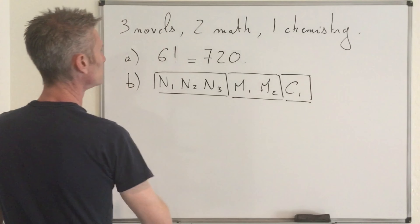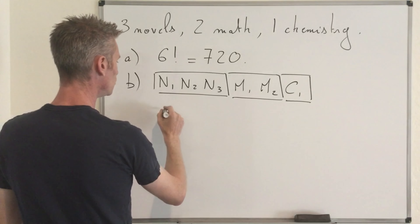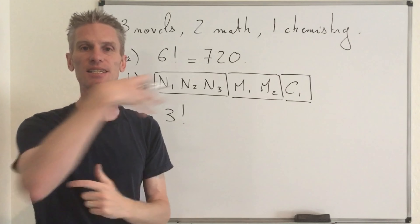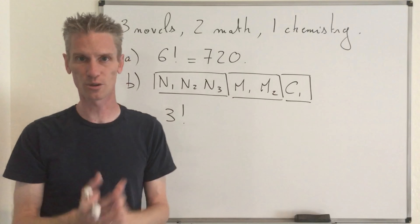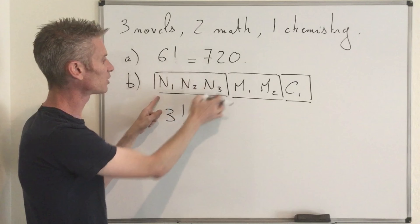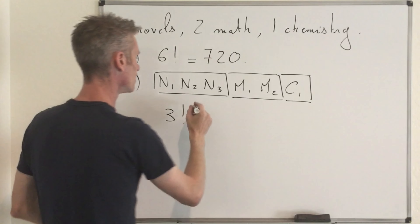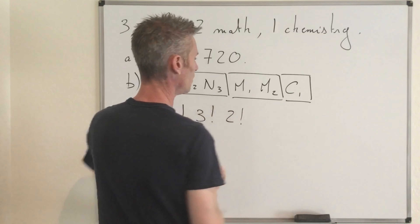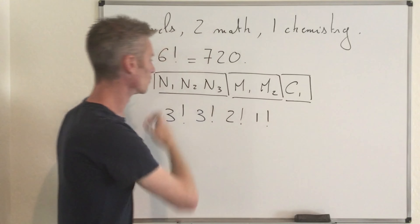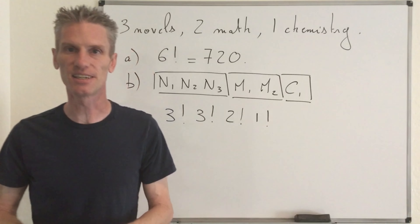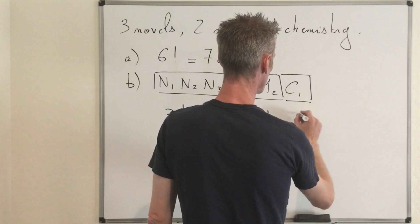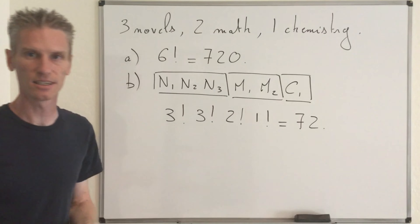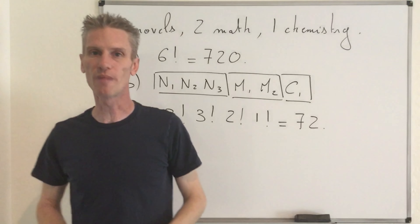So eventually you get that the number of possible permutations is equal to three factorial — the three comes from the fact that we have three blocks — times three factorial for the novels within their block, times two factorial for the math books, times one factorial for the chemistry book. If you compute this explicitly, you find exactly 72. So there are 72 possible ways to order those six books such that the three novels are together and the two math books are together.